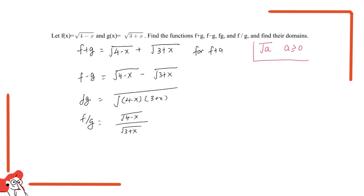For f plus g, 4 minus x has to be greater or equal to zero, so x should be smaller than 4. That's the first condition. And then 3 plus x should also be greater than zero, so x has to be greater than negative 3. Other than these two conditions, there are no more. For f plus x, the domain is...